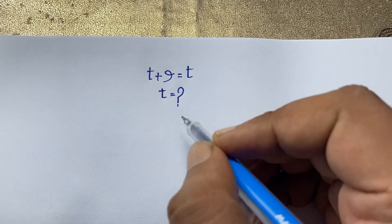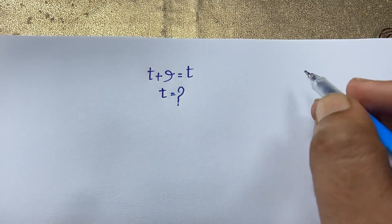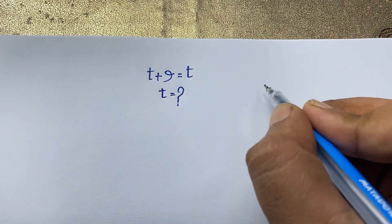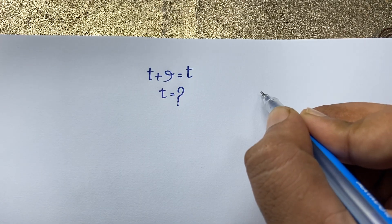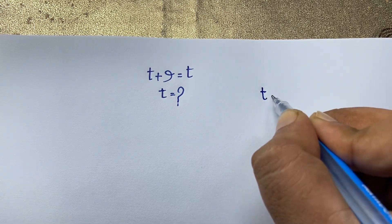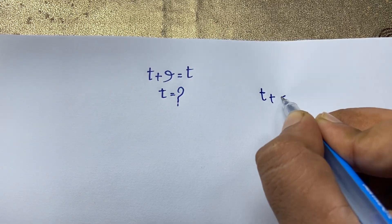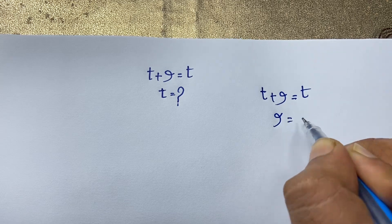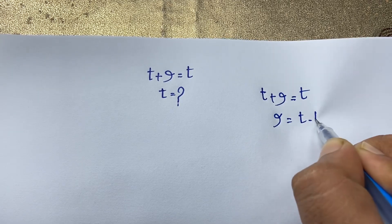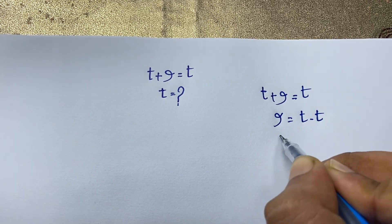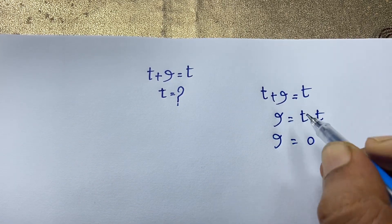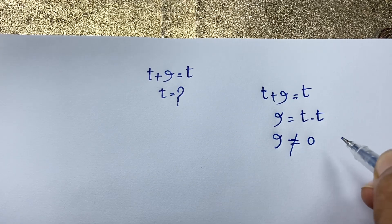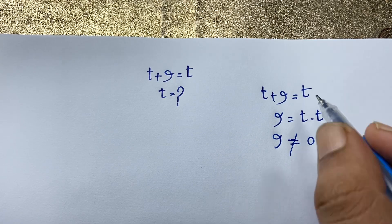So how to solve this interesting math question? First of all, you can move t to the other side: √(t + 9) = t, then 9 is equal to t minus t, which gives 9 is equal to 0. Since 9 is not equal to 0, you can see this contradiction using this method.